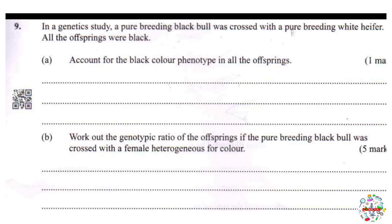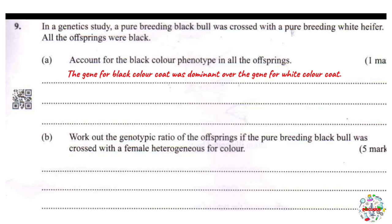Complete dominance is a type of inheritance whereby one allele is completely dominant over the other — which is termed recessive. The dominant allele completely masks or hides the effect of the other allele. In this case, the gene responsible for black fur color is dominant over the one responsible for white fur color and therefore masks its expression.